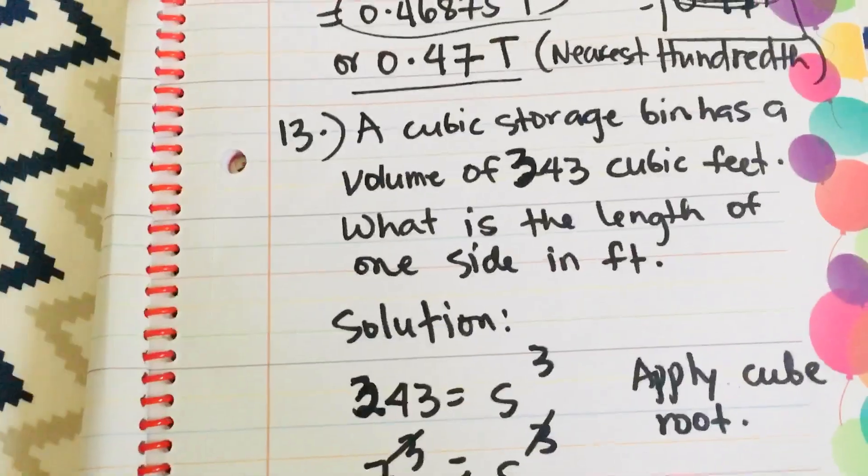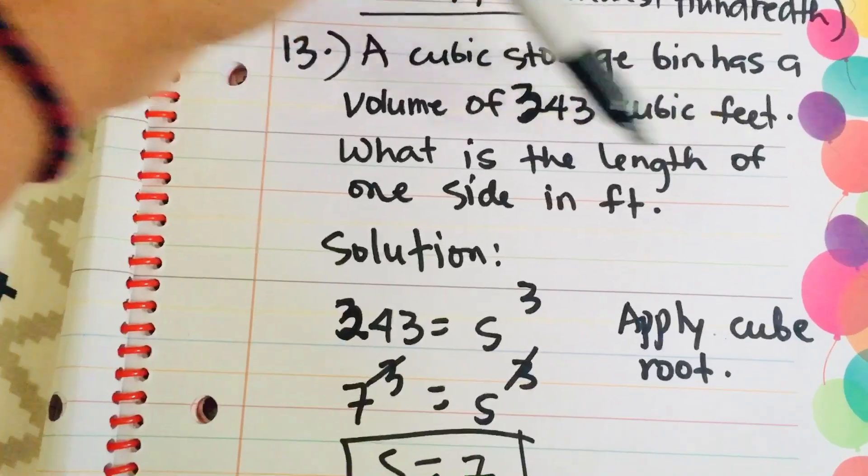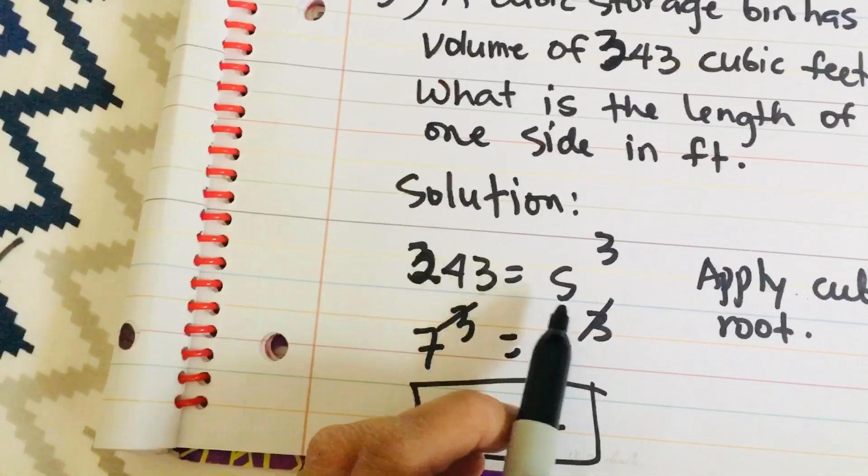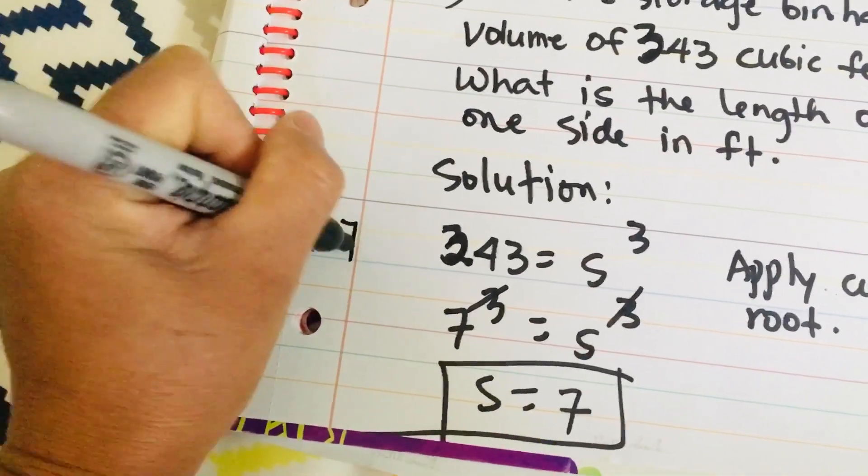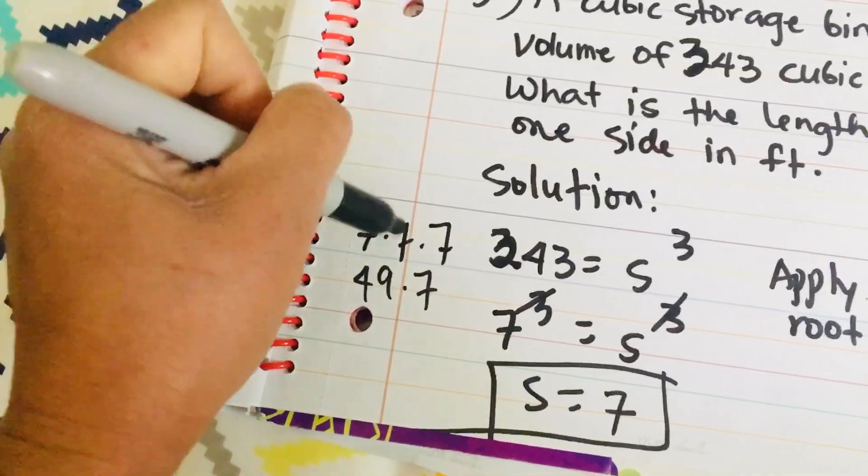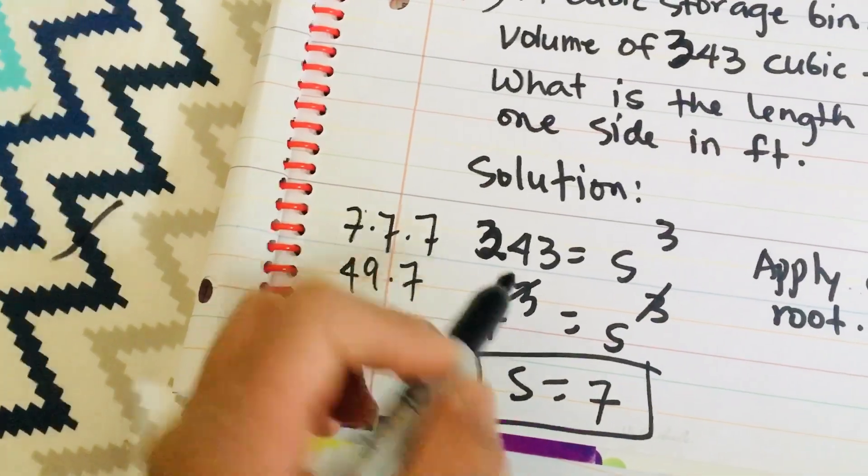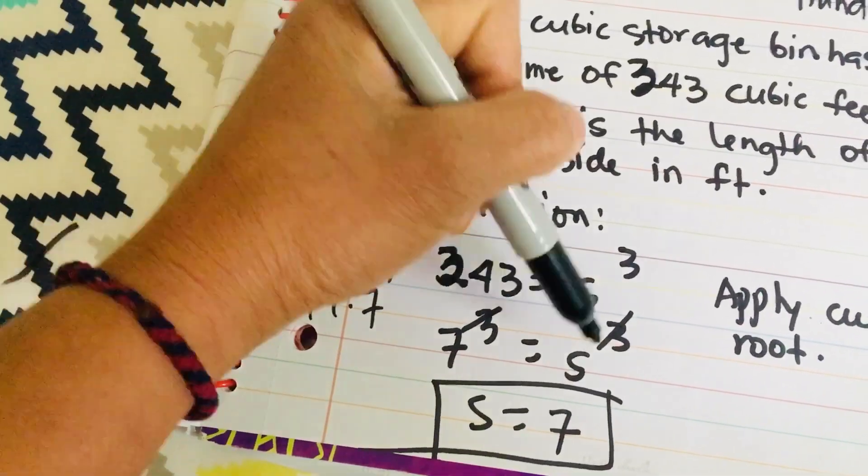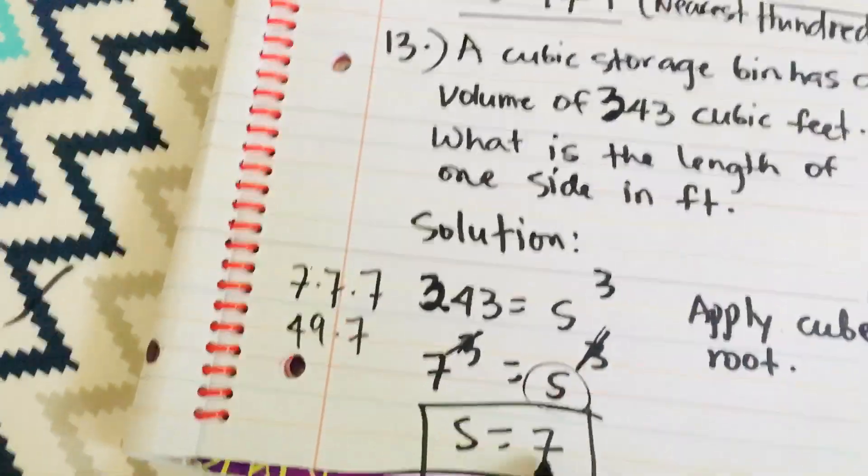Okay, number 13. A cubic storage bin has a volume of 343 cubic feet. What is the length of one side in feet? So, solution. Is 343 a perfect root? We will find out. And cube has three sides. So, here I tried 7 times 7 times 7. 7 times 7 is 49 times 7 is 343. So, you just use 7 as your base. And then 1, 2, 3. Then that would be your exponent 3. So, 7 to the power of 3 is equal to S to the power of 3. Since they have the same power, 7 to the power of 3 and S to the power of 3, you just cancel the power. So, you will obtain the side. So, S is equal to 7. This is the answer. So, I have here a note. Apply the cube root.